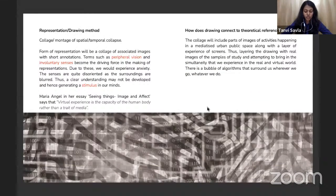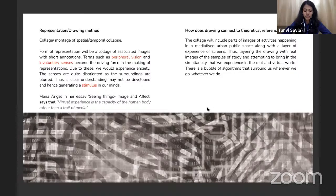The form of representation will be a collage of associated images with short annotations. Terms such as peripheral vision and involuntary senses become the driving force in making the representations. Due to these, we experience anxiety — the senses are quite disoriented and surroundings are blurred, thus a clear understanding may not be developed, generating a stimulus in our minds. We experience a kind of blurred vision of our surroundings which is less accurate while looking at our screens — this kind of vision is illusionary, only a representation of the actual experience. As Maria Angel says in 'Seeing Things: Image and Affect,' virtual experience is the capacity of the human body rather than a trait of media.